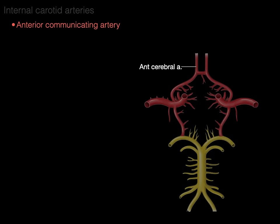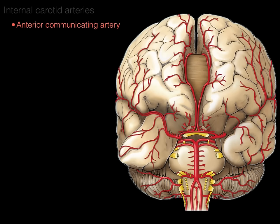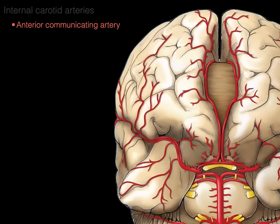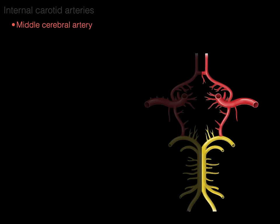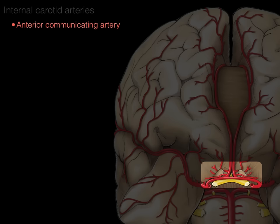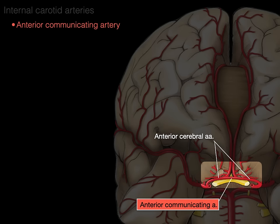The anterior communicating artery connects the two anterior cerebral arteries. From this anterior view, there are the two anterior cerebral arteries, and the anterior communicating artery connects them together.